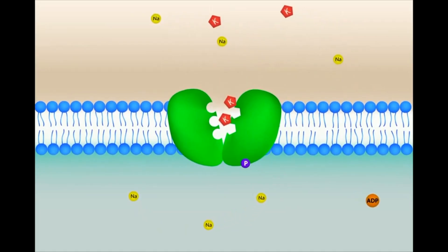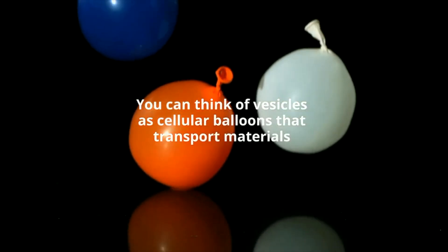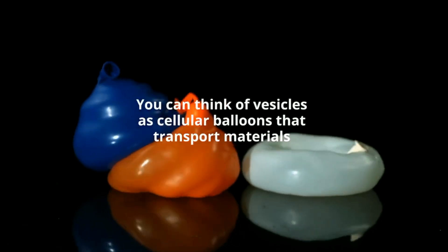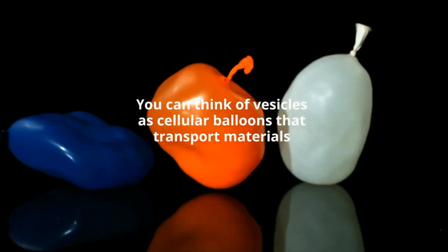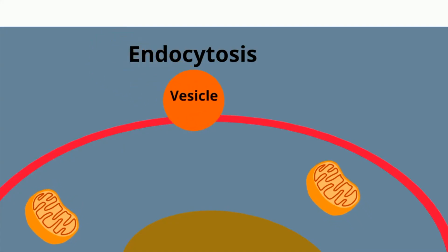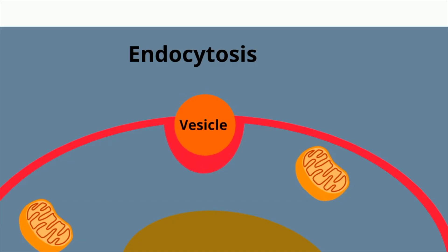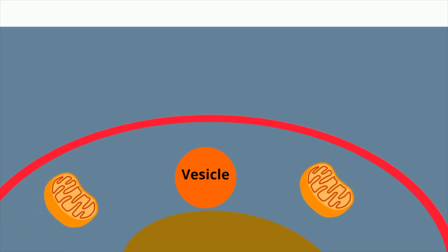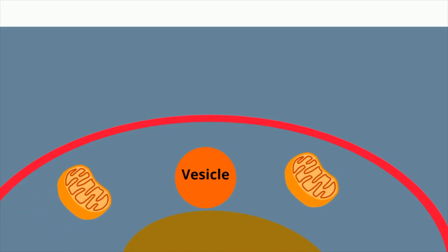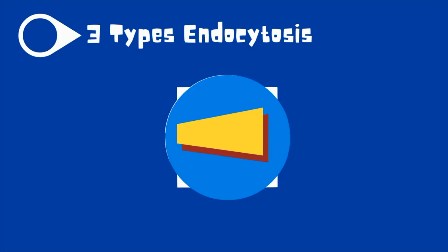The cell also uses two types of vesicle movement: endocytosis and exocytosis. Endocytosis allows the cell to move larger objects into the cell by engulfing the object. There are three types of endocytosis.